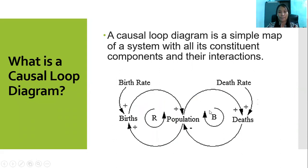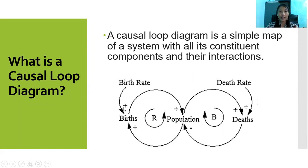This is a simple map. Through a causal diagram, it helps us identify a common archetype or a common structure of a system. With this, we would know that variables or elements have an influence or interaction between them.